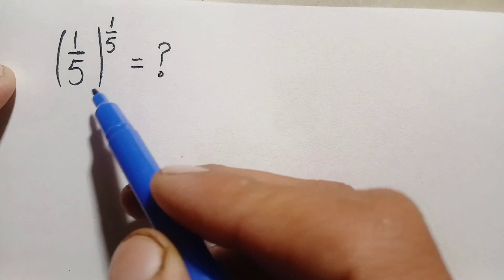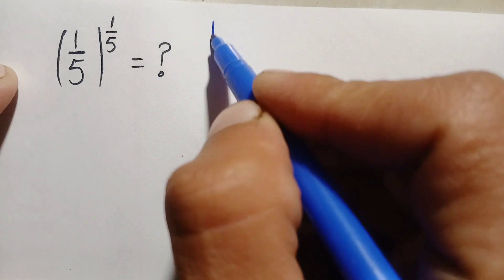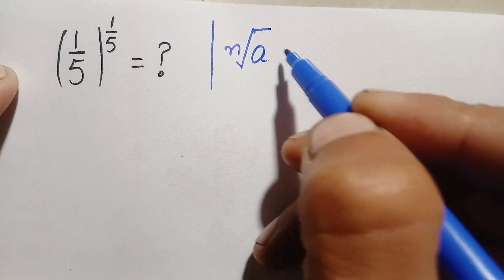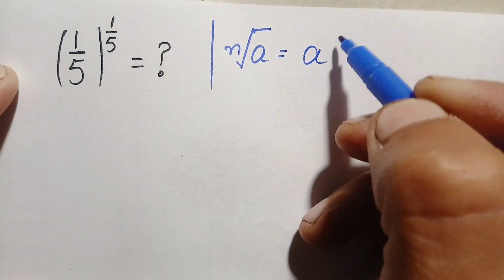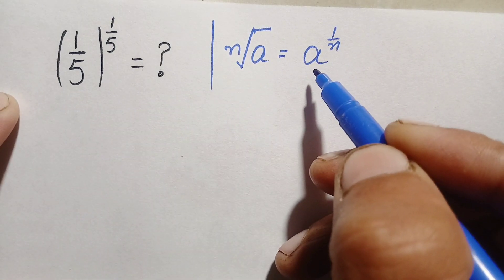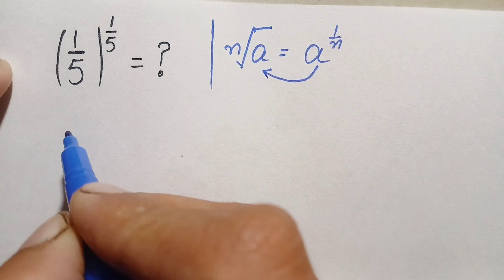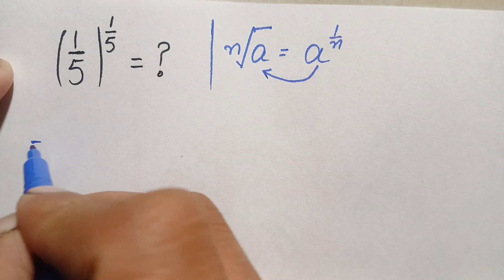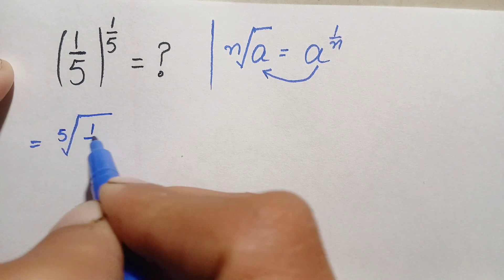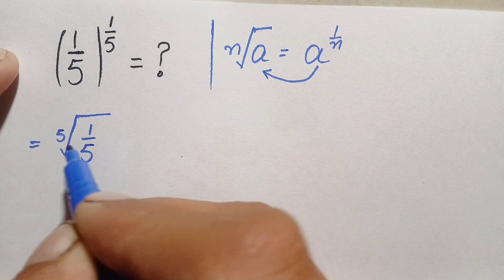First of all, we will change this number to radical form. We know that the nth root of any number a in exponential form is a raised to power one over n. This number is in exponential form, so we will change it to radical form. This will become the fifth root of one over five.